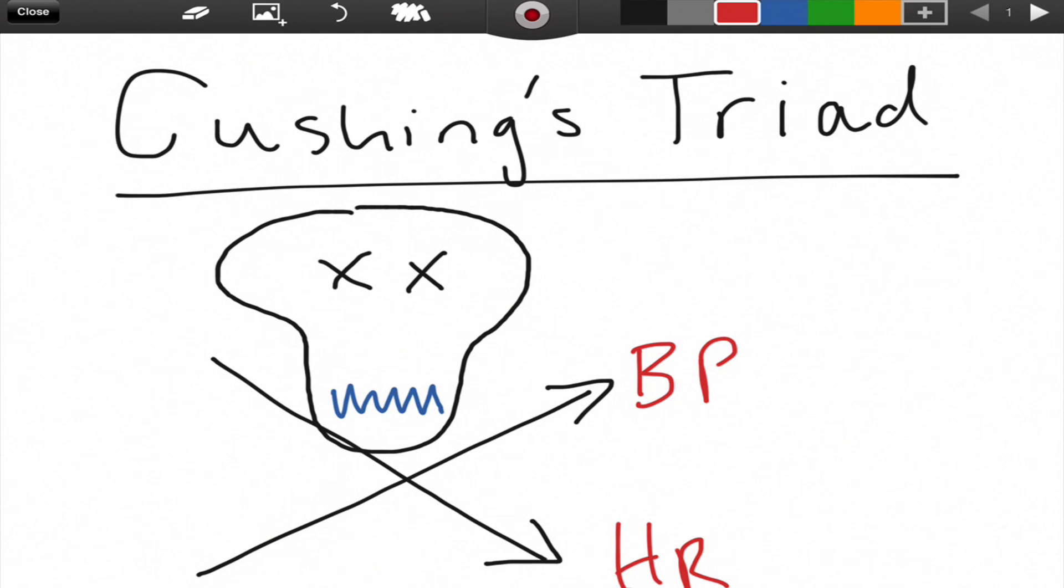So the three components of Cushing's Triad are an increase in systolic blood pressure, a decrease in heart rate, and a decrease in respirations.